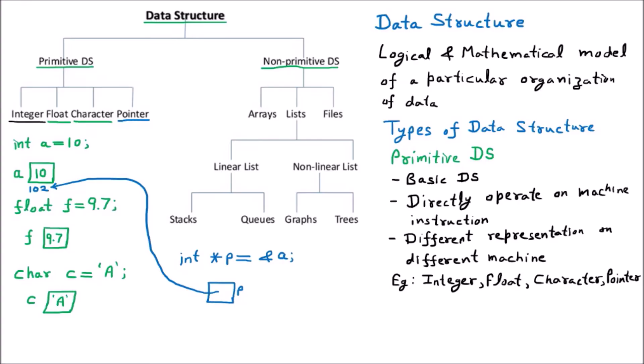These concepts we have already learned in C programming, because data structure is the next level of C programming. That is why integer, float, character, and pointer are all considered primitive data structures.